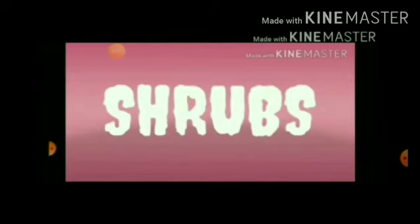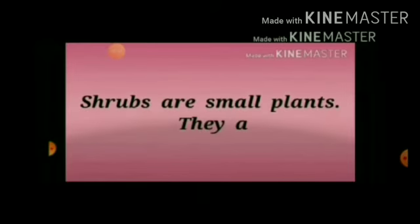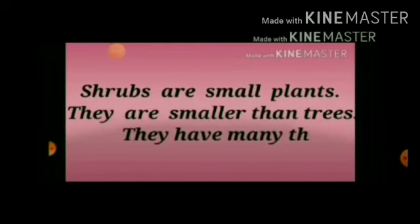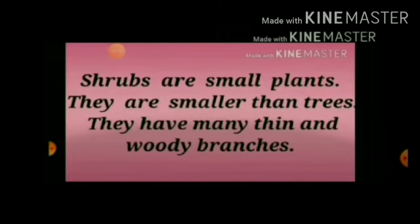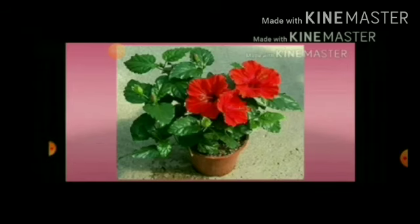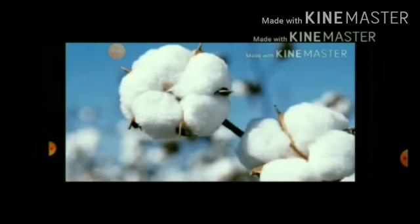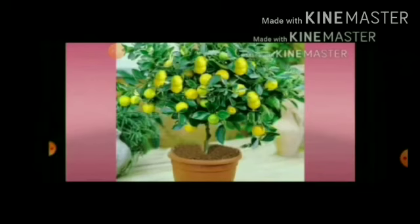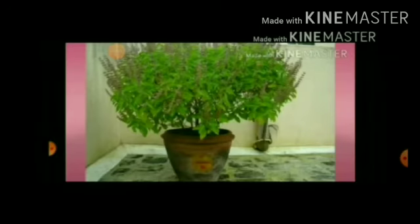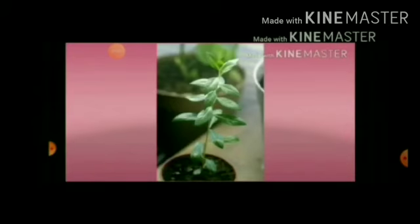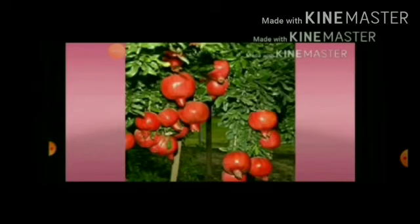Let us talk about shrubs. Children, shrubs are very small compared to trees. Shrubs are small plants — they are smaller than trees. They have many thin and woody branches. Some shrubs are hibiscus, rose, cotton, lemon, tulsi, mehendi, and pomegranate. These are examples of shrubs.